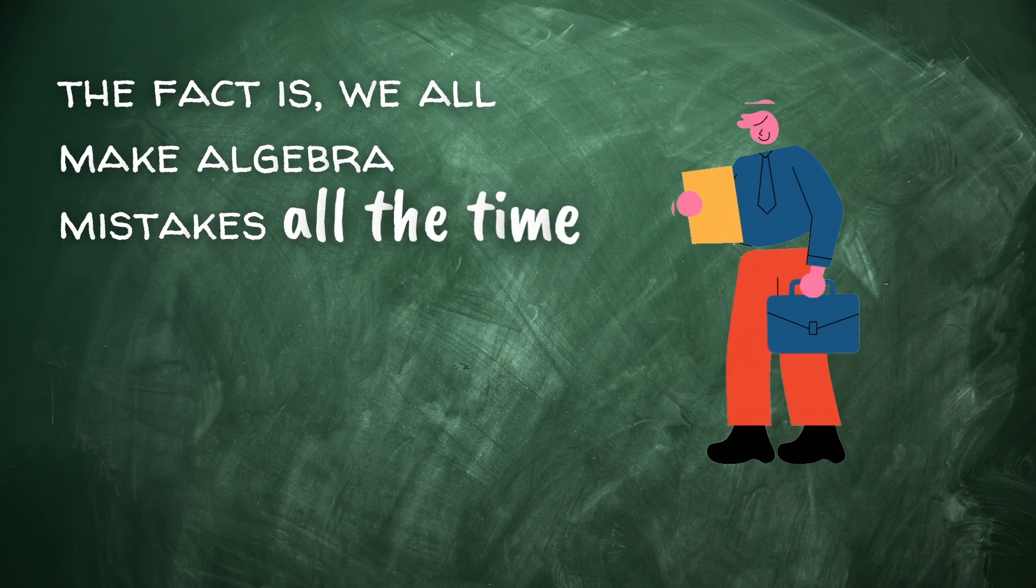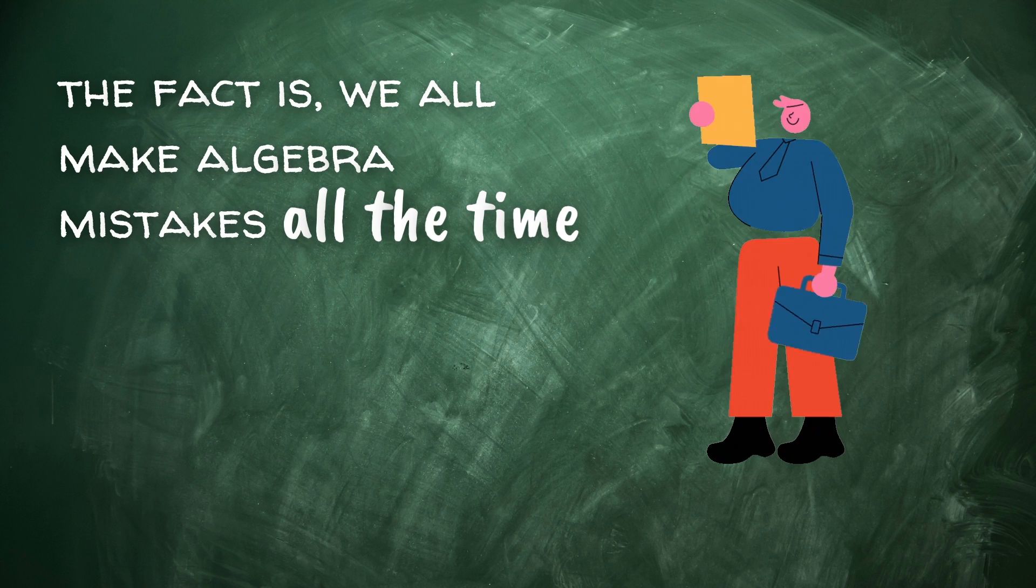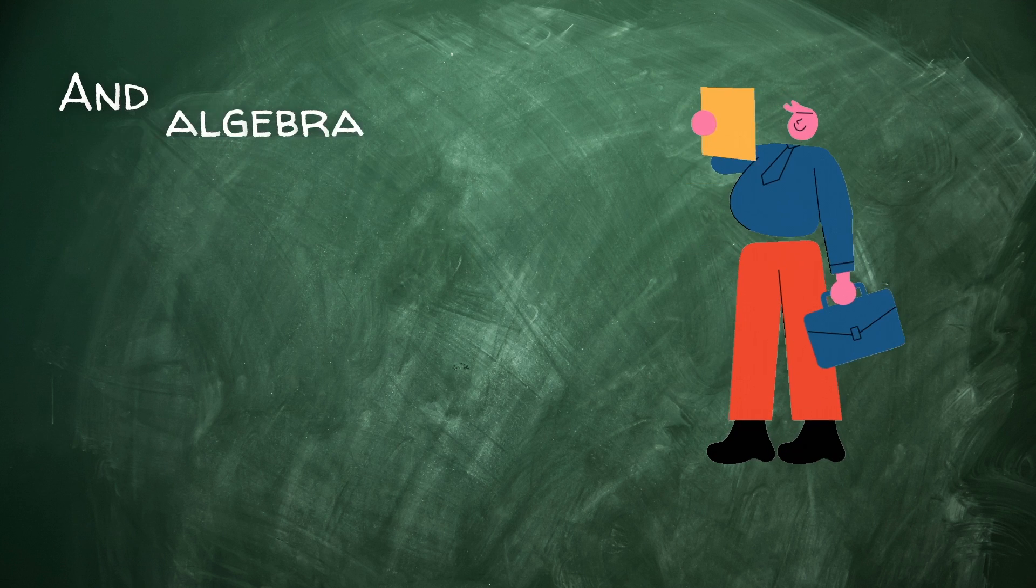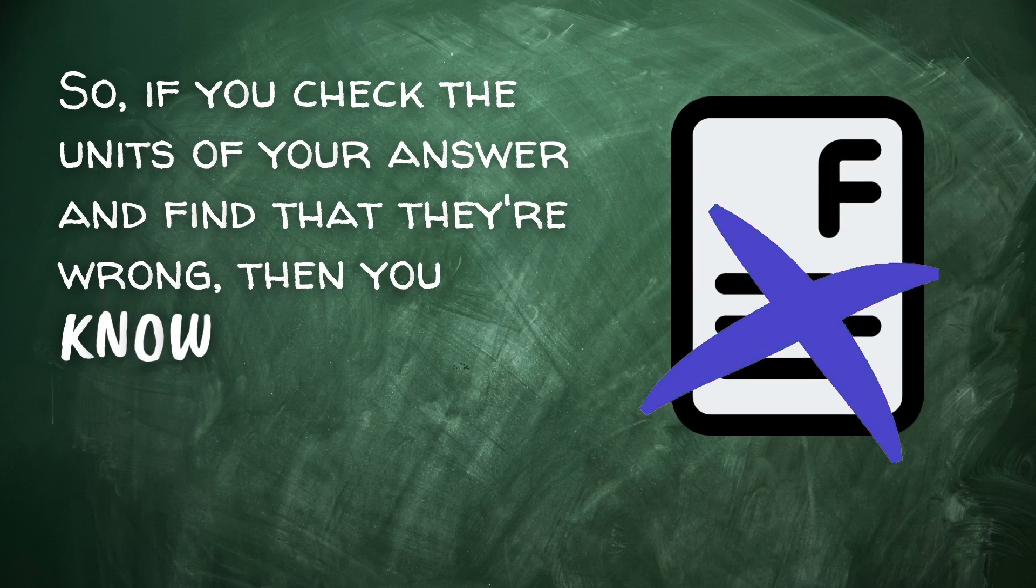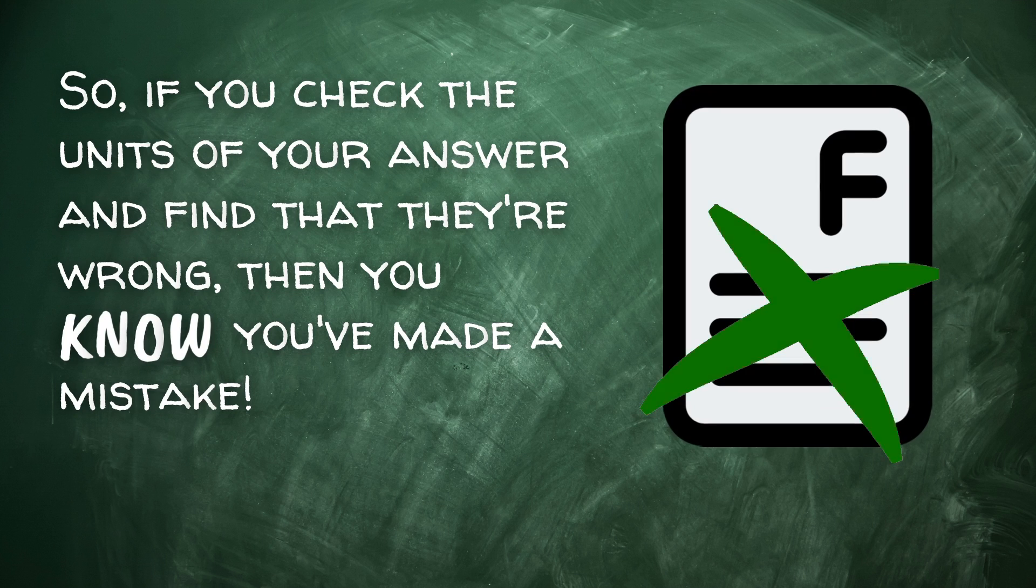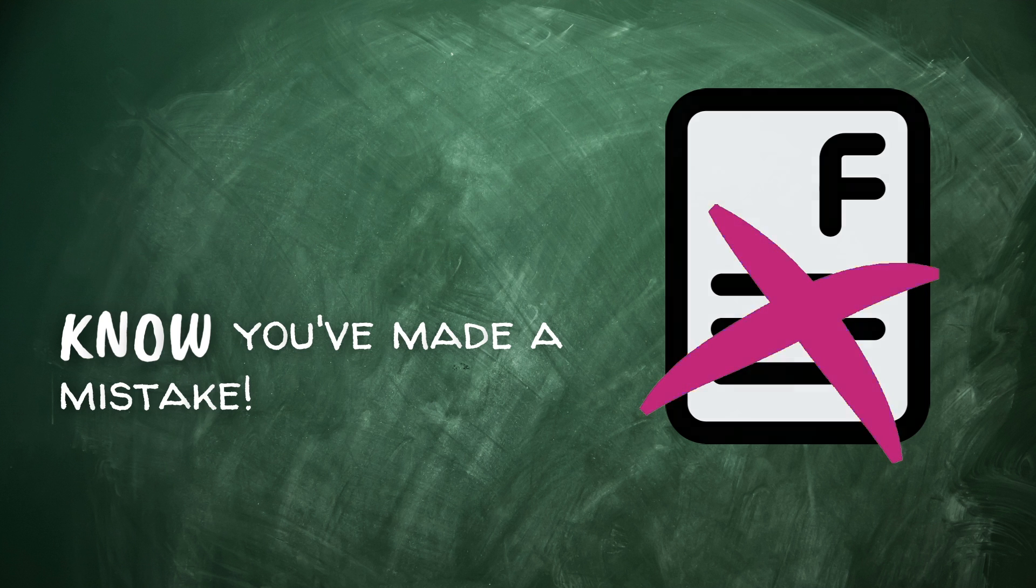Here's the thing. We all make algebra mistakes all the time - you, me, everybody. And usually, when we make an algebra mistake, it screws up the units. So if you check the units of your answer and find that they're wrong, then you immediately know you must have made a mistake somewhere, and you need to backtrack. That way, you can track down your own mistakes and elevate your grade.